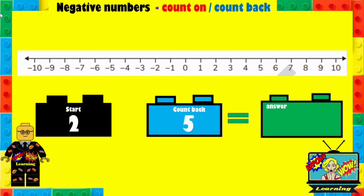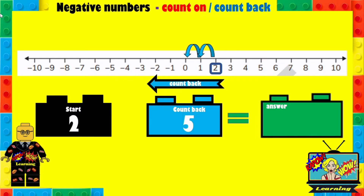Here's another example. If we start at 2 and count back 5, what will the answer be? You can pause this, try to work it out, and then don't forget to press play. So we start at 2, and when we count back we go to the left 5 places: 1, 2, 3, 4, 5. So your answer should have been minus 3.